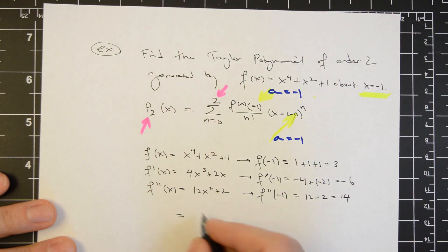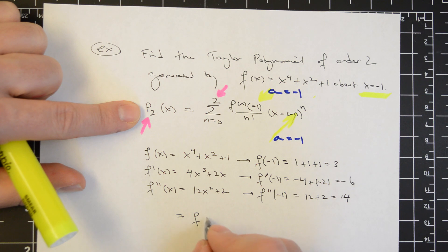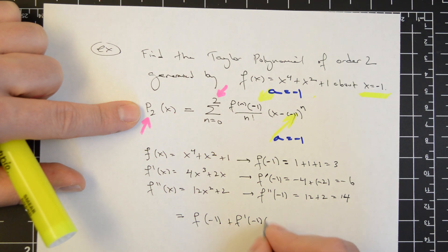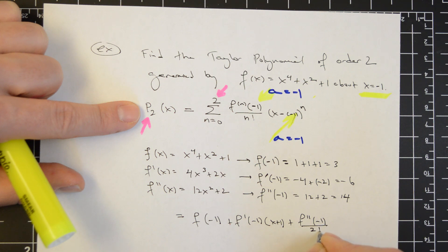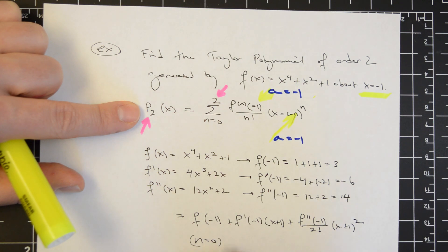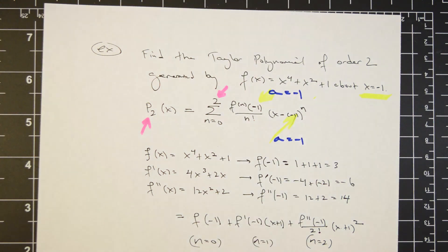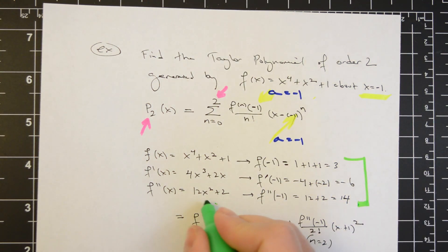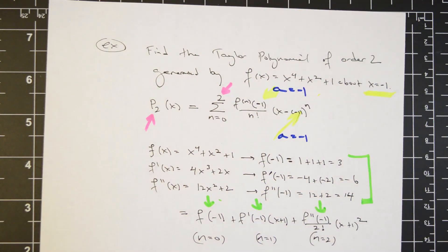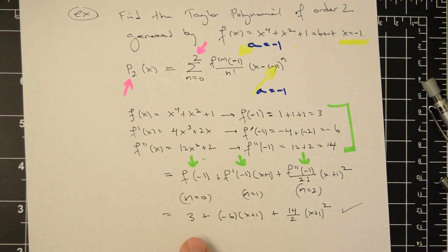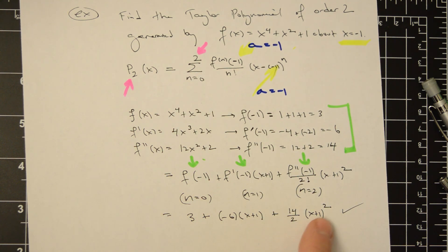Evaluating each of these derivatives at minus 1: f of minus 1 equals 1 plus 1 plus 1 equals 3, f prime of minus 1 is negative 4 plus minus 2 equals negative 6, and f double prime of negative 1 is 12 plus 2, which is 14. Writing out the sum for the second order Taylor polynomial, the final answer is 3 plus negative 6 times x plus 1 plus 14 over 2 times x plus 1 quantity squared.